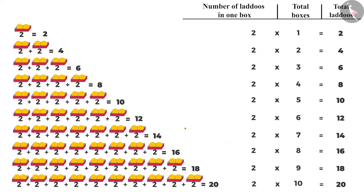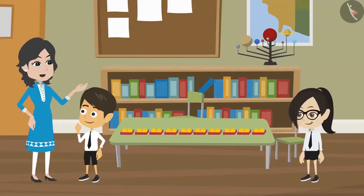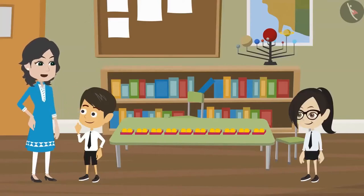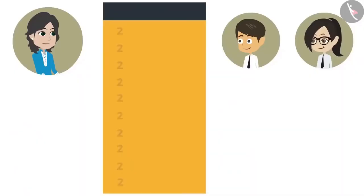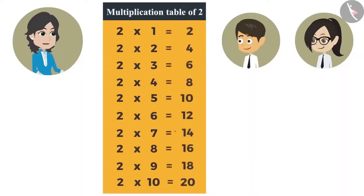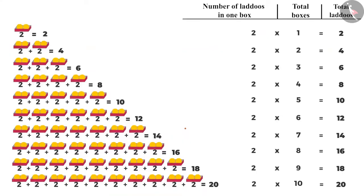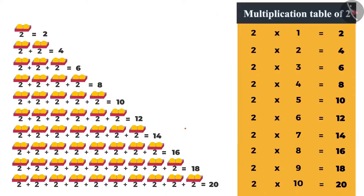It is easier to multiply two numbers than adding the same number again and again. Yes, that is why it is very important to memorize the tables. Otherwise you have to use a pen and paper even for simple calculations. What are tables? The list obtained when you multiply a number by 1 to 10 is called the multiplication table of that number. Just like you have multiplied 2 by 1 to 10 and obtained this list. This is the multiplication table of 2.